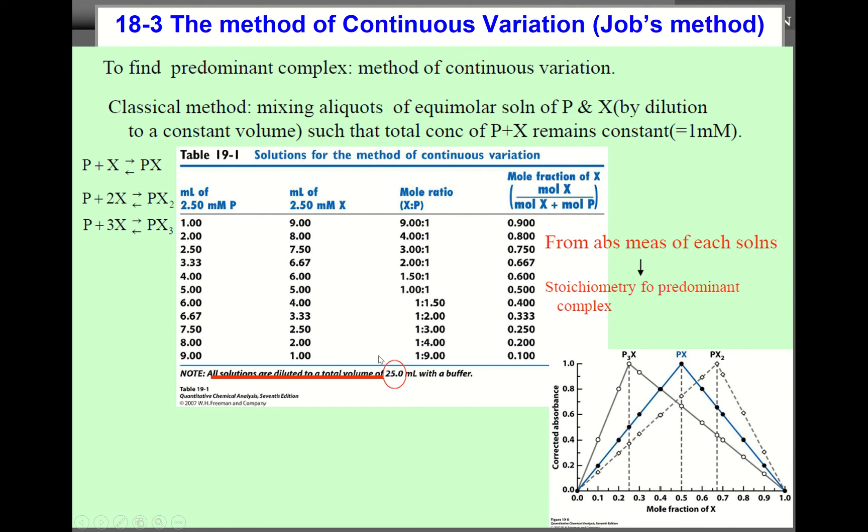But if PX₂ forms, that means one P species reacts with two X species. In this case, at a mole fraction of 0.667, then you can get maximum corrected absorbance. But what about in the case of P₃X? In this case, X must be 0.25, and then you get the maximum corrected absorbance.